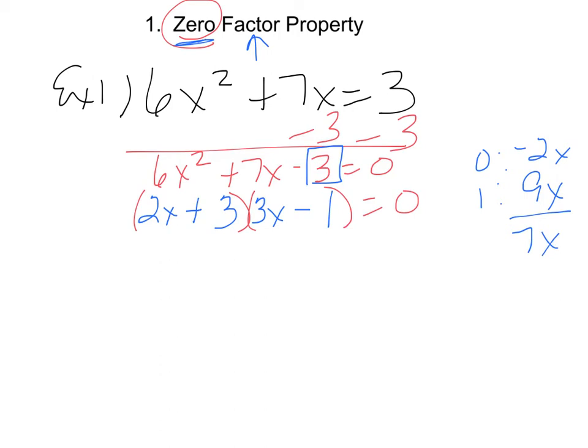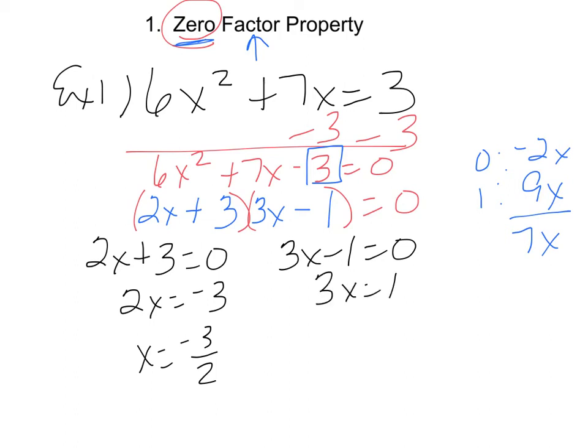The whole purpose of the zero factor property is to break it down. We want to break this down into two linear factors. As soon as I have a plain x, we can solve this baby all day long. Set each one equal to zero. So 2x plus 3 equals zero, and 3x minus 1 equals zero. Then solve for x. So subtract 3 from both sides. Divide by 2, and x is a negative 3 halves. For the next one, add 1, divide by 3, and there you have it.